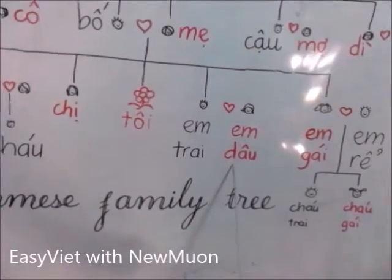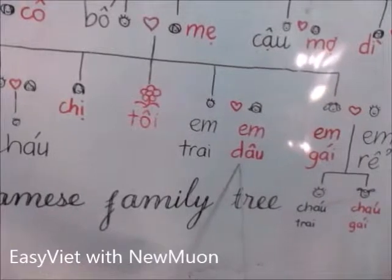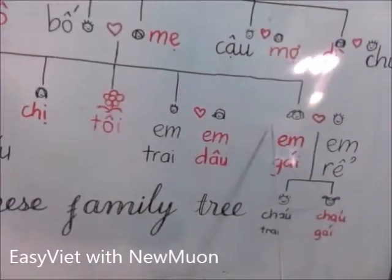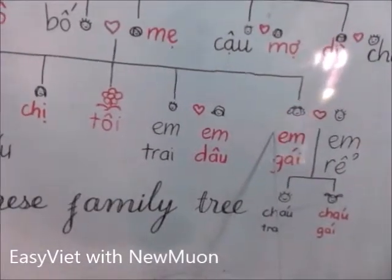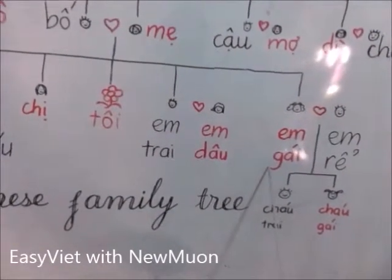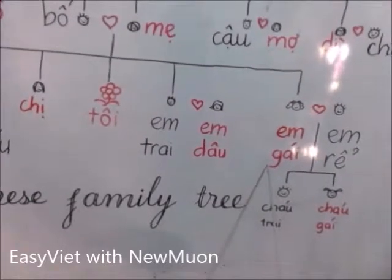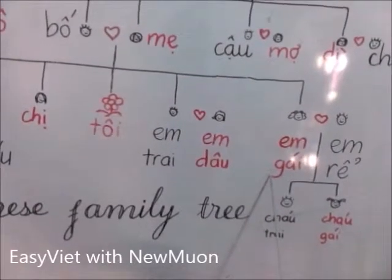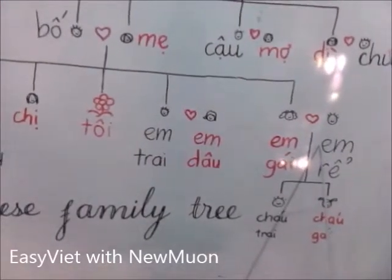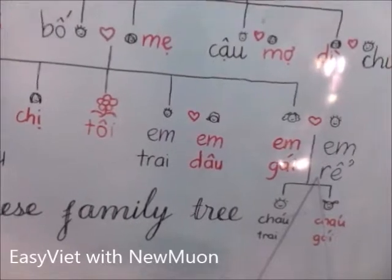Dâu is used for sisters-in-law. My younger sister is Em Gái — Gái means female. And her husband is Em Rể.